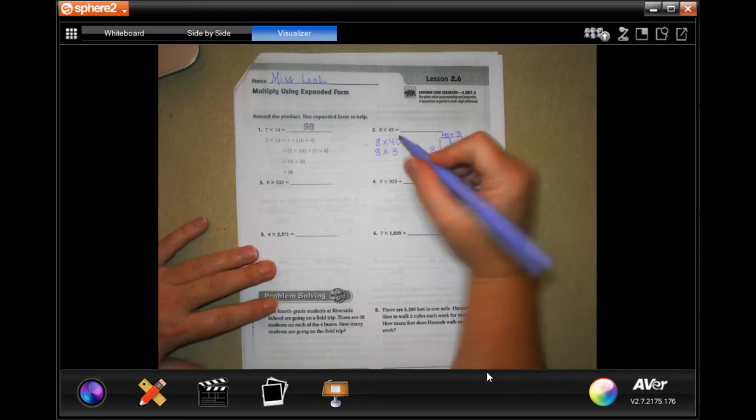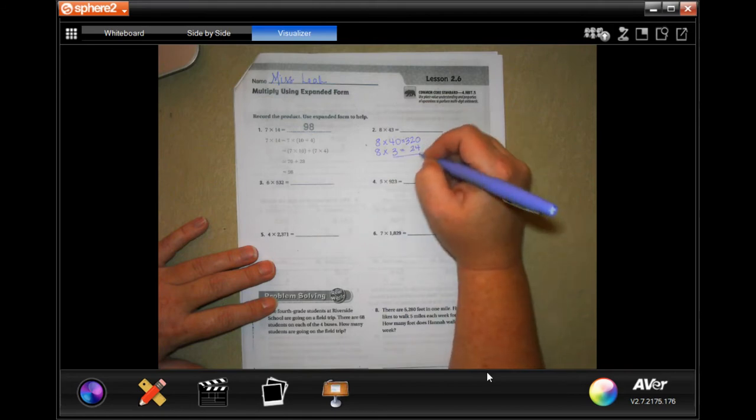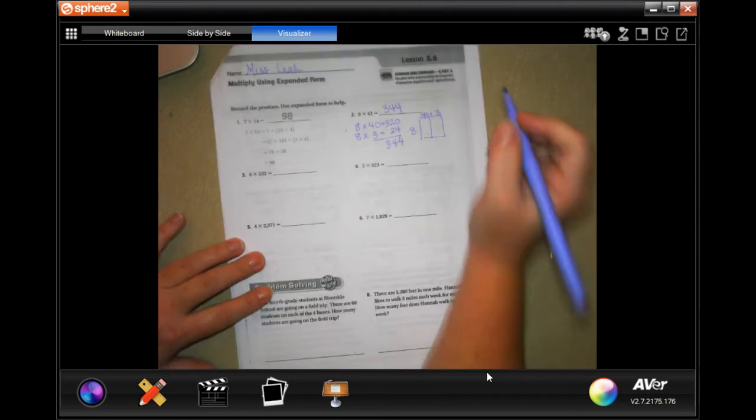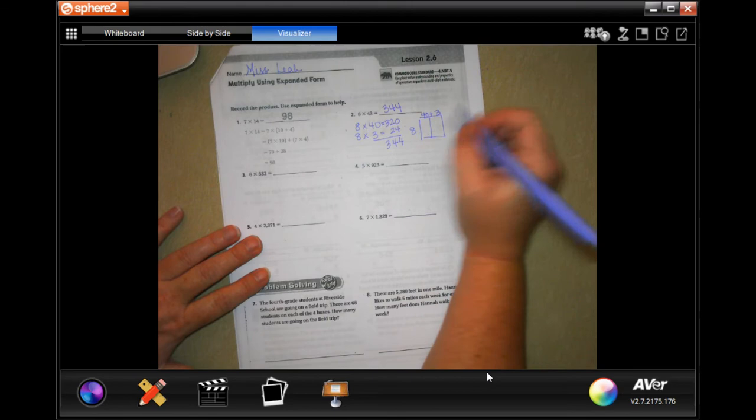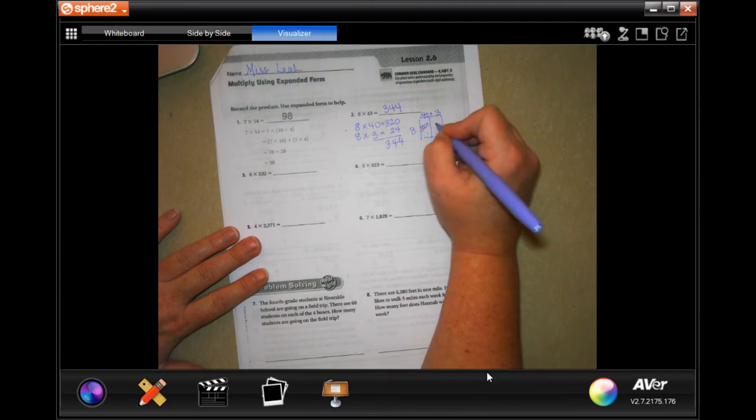Okay, so eight times four is 32, and then add that zero. One. And eight times three is 24. You add those guys up, 344. Now to remind you how to deal with the boxes, we're gonna go eight times four is 32, add that zero. One. Eight times three, 24. You would still add those two up and still get 344.